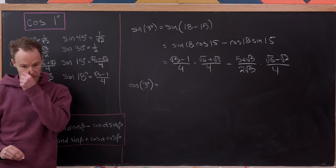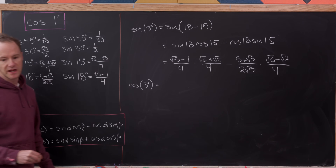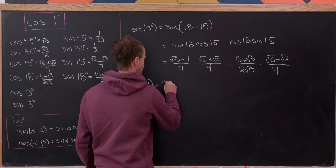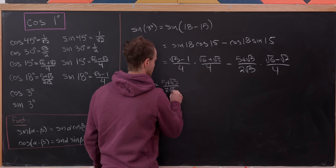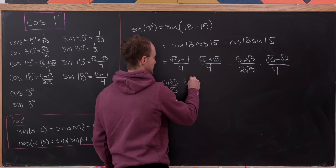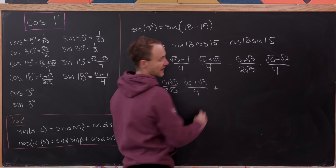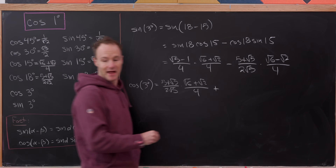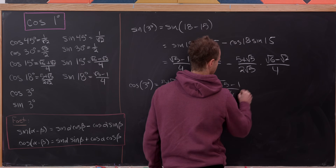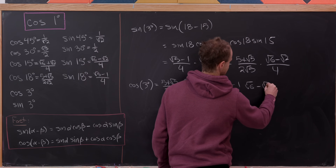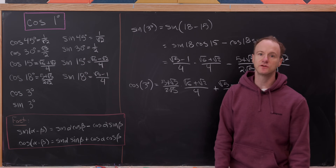We get a similar formula for cosine of 3 degrees using the cosine difference formula. That gives us 5 plus root 5 over 2 root 2, multiplied by root 6 plus root 2 over 4, plus root 5 minus 1 over 4 times root 6 minus root 2 over 4. Now we've got our values of cosine and sine of 3 degrees.